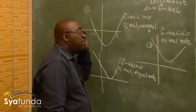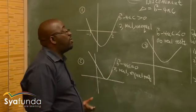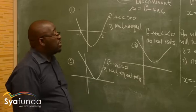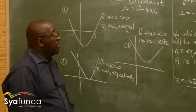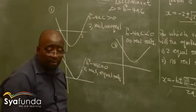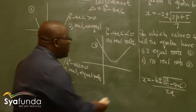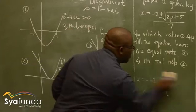So these three diagrams are key to understanding the nature of roots. If the discriminant is positive: two real unequal roots. If zero: two real equal roots. If negative: no real roots, because there is no square root of a negative number — the expression is undefined, so we call them non-real or imaginary roots.